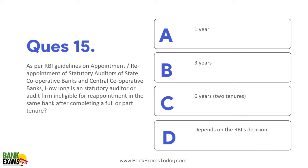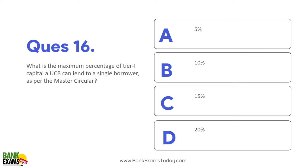Cooling period kitna hai? Statutory auditor jo hai, woh ineligible for reappointment ho jata hai - two tenure hours ke liye, that means six years. Teen saal ke liye ek baar auditor banne ke baad, kisi bhi central ya state cooperative bank ka, two tenure jo hai - 6 saal woh nahi ban sakte, dubara cooling period hai.